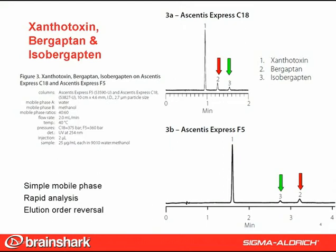Why is the ability to reverse elution order useful? Primarily for trace analysis, where you want the compounds in excess to elute after the trace level compounds. Using different phase chemistries is the most effective means to alter elution order. We have provided this ability by offering a wide variety of Ascentus Express phase chemistries, including C8, C18, phenylhexyl, F5, HILIC, and AMIDE, with others currently in development.